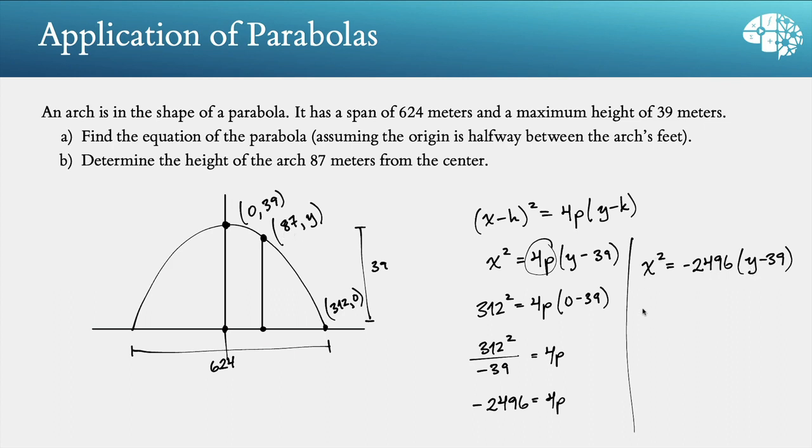So plugging in the x-value, we have 87 squared equals negative 2,496 times y minus 39. And so to solve for y, we'll divide by the negative 2,496. And that'll be y minus 39. And then we can add 39 to that. So 87 squared over negative 2,496 plus 39 is that y-value that we're looking for. And we'll go ahead and plug that into our calculator.